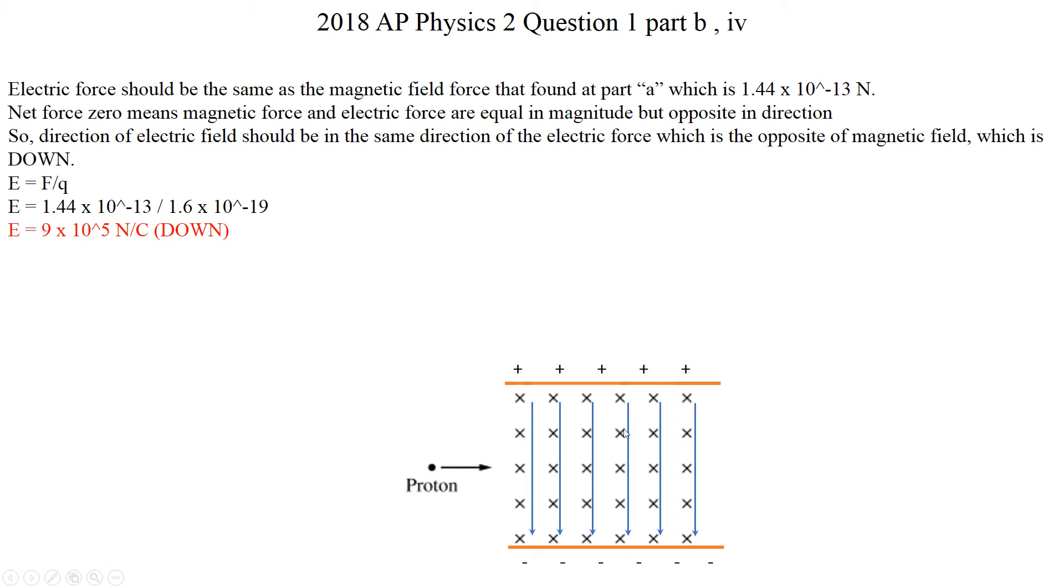Since this is a proton, that proton should be pushed down. So that means you're going to have positive charges on the top plates and negative charges in the bottom plate. And we know that electric field goes from positive to negative charge. Then electric fields will be downward. So how can we find that electric field numerically?